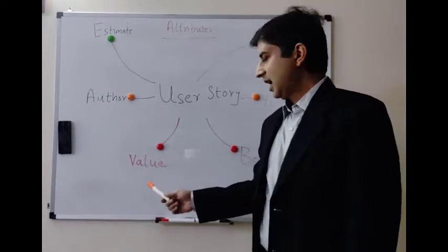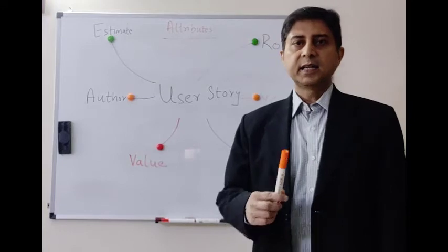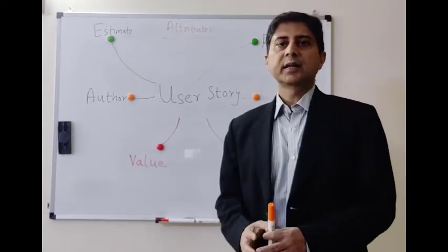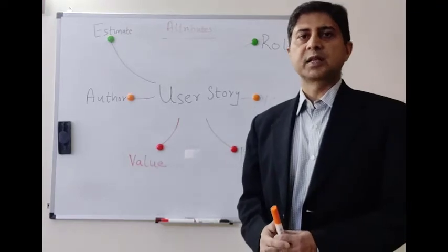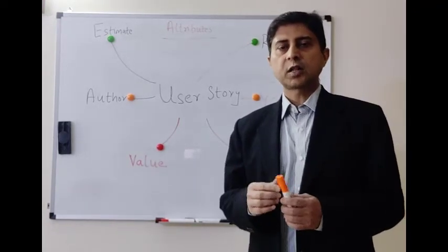There can be other attributes like acceptance criteria, the sprint number in which the user story is getting delivered, or even the status of the user story. This is how we identify the user story across multiple attributes.